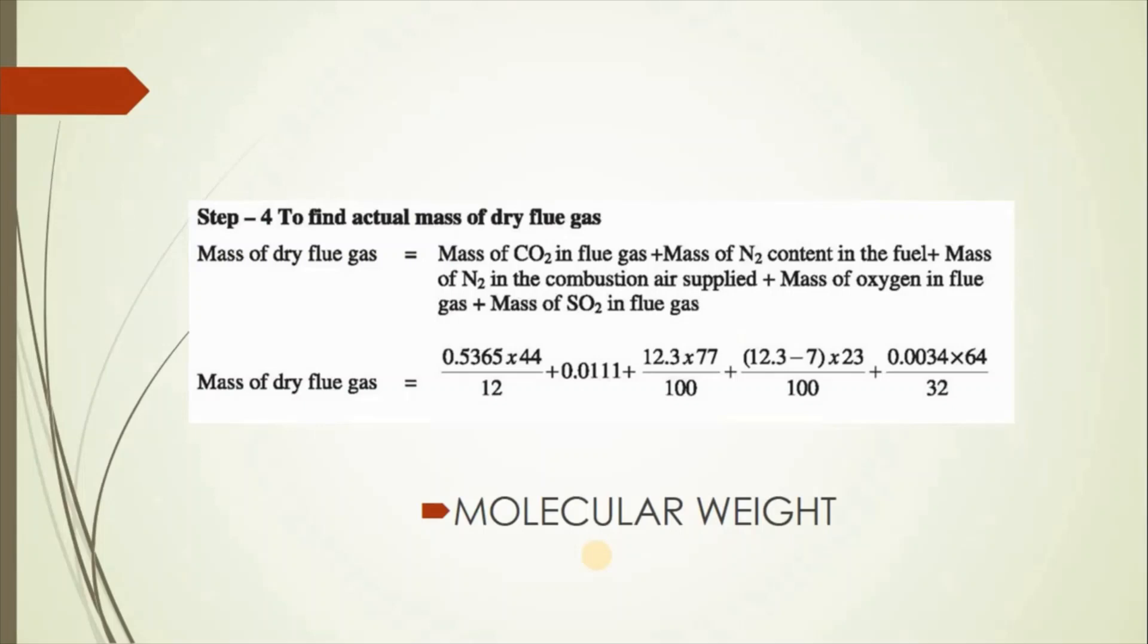For example, if you know the boiler chapter and use the indirect method to find boiler efficiency, you have to find out the loss due to dry flue gas. For calculating the mass of dry flue gas, BEE uses different formulas. If you have a basic knowledge of molecular weight, then you will definitely be able to solve this question. That is the reason why I told you that you should study 11th and 12th physics.